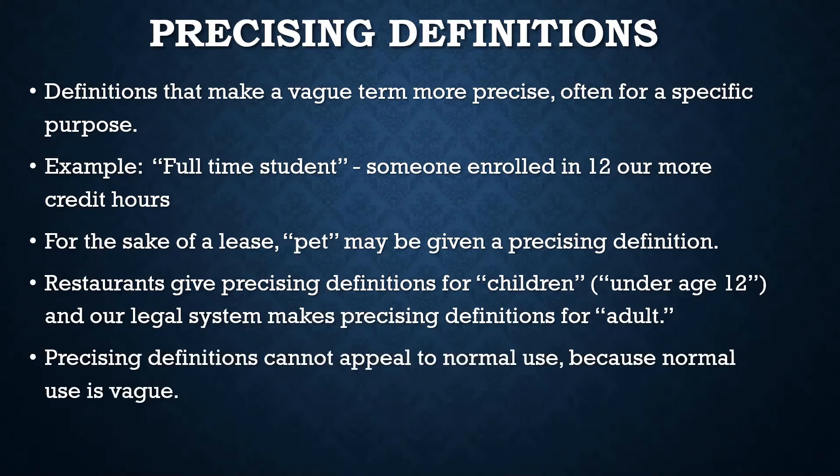It should be noted that precising definitions cannot appeal to normal use because normal use is vague. 'Adult' and 'children' are vague terms, so you can't just appeal to a dictionary definition or normal use. You have to artificially create boundaries for these words.